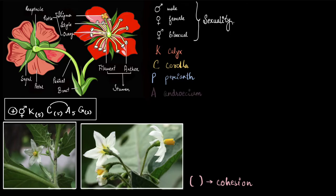Next to perianth we have androecium — the male part of the flower, the stamens. In this flower we have five stamens, and they are not fused.